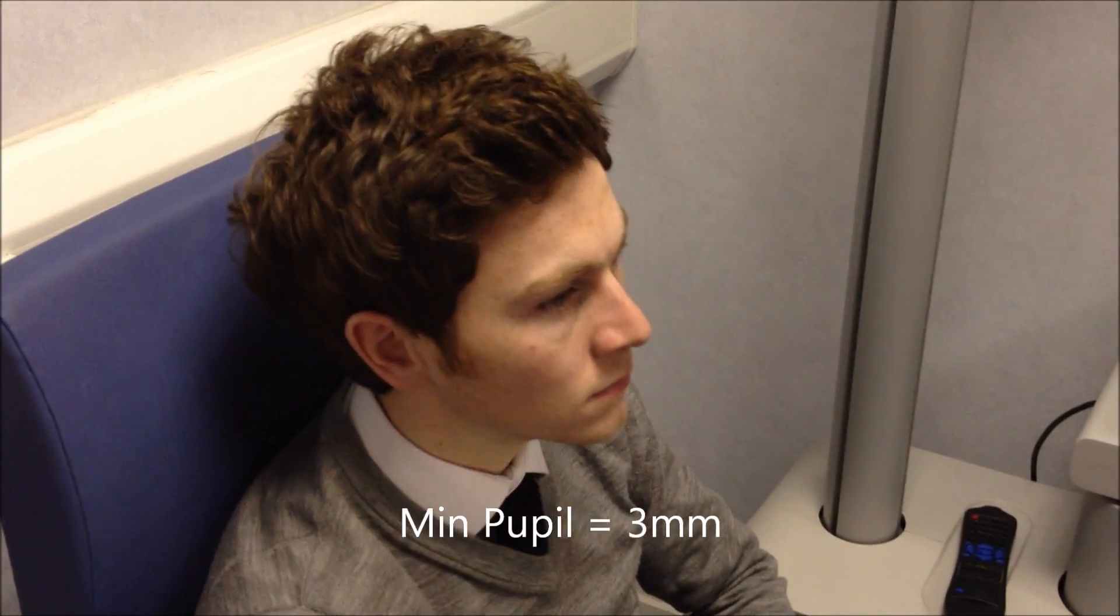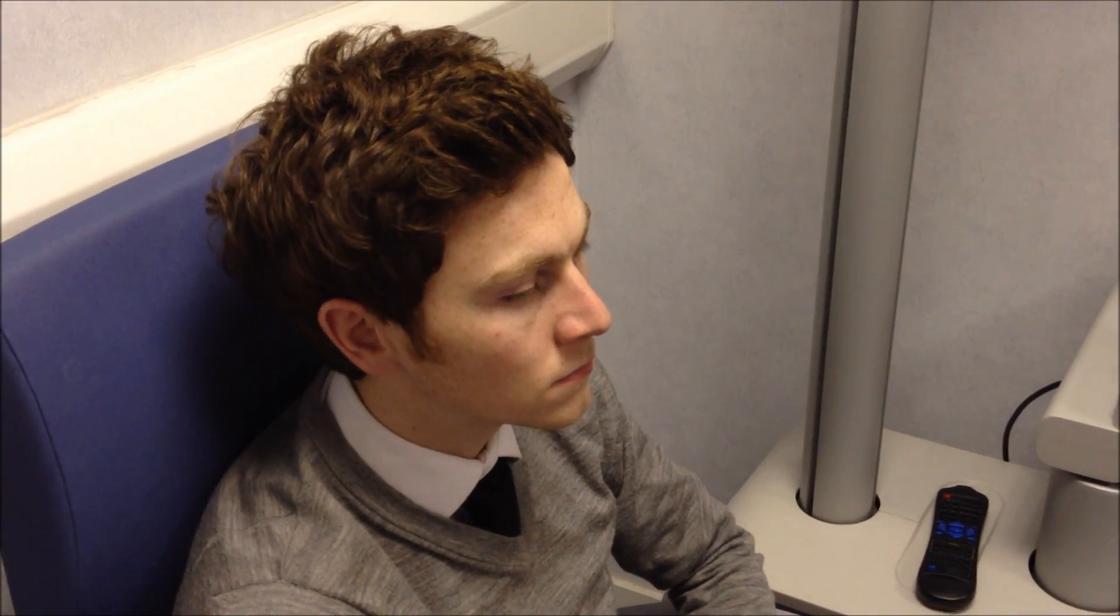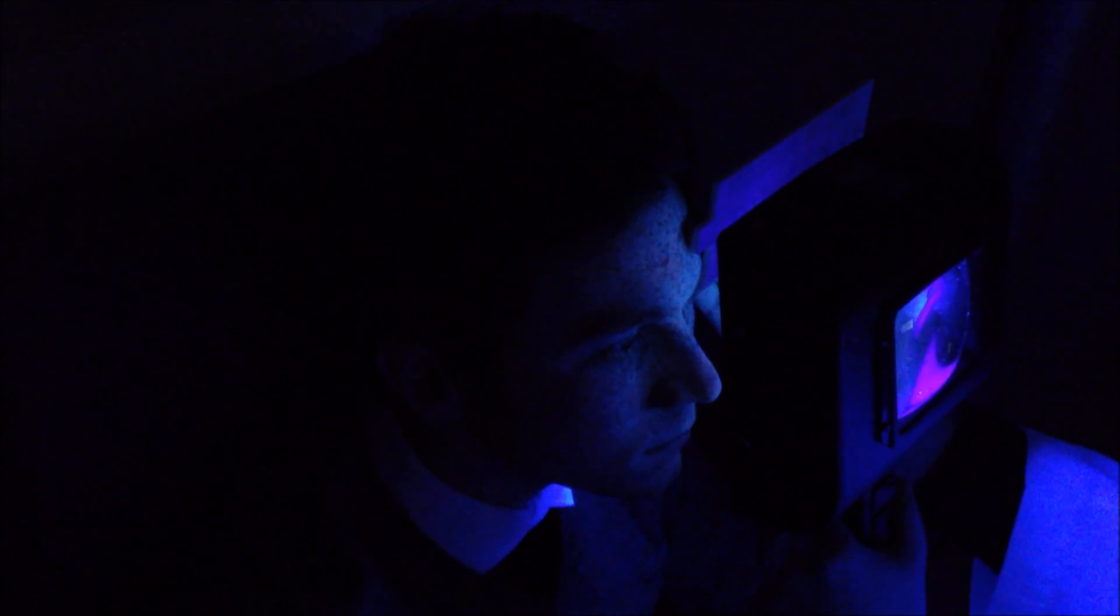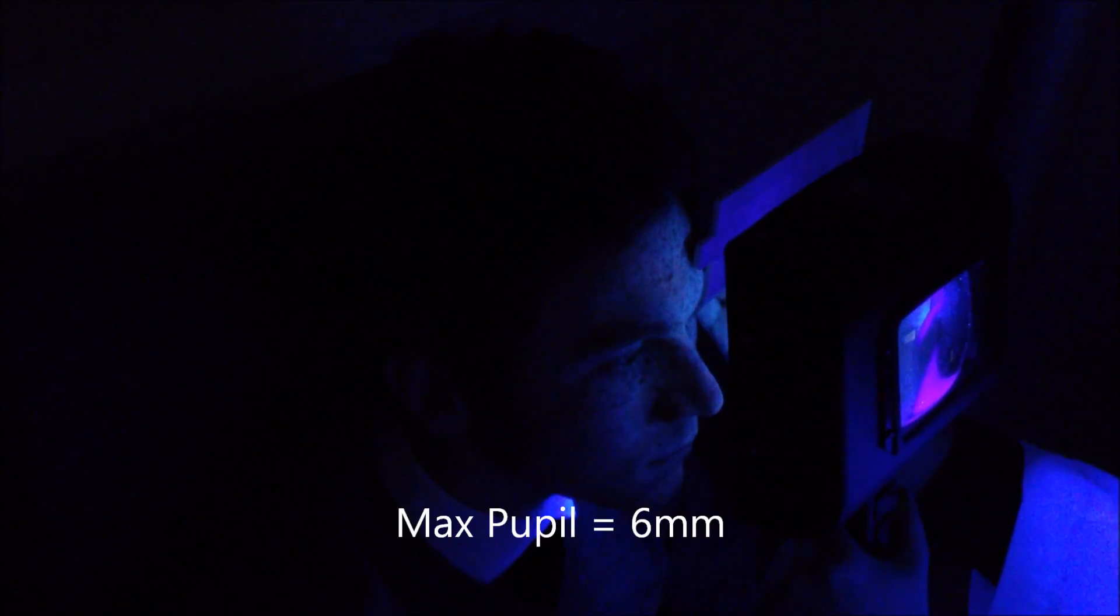Next thing we'll do is measure the maximum pupil, so we'll turn the room lights off for this, and then we'll switch the button lamp just to UV light. Same thing again, pull it up against the patient, you can use the magnifier, and measure his maximum pupil. That comes out at about 6 millimeters.